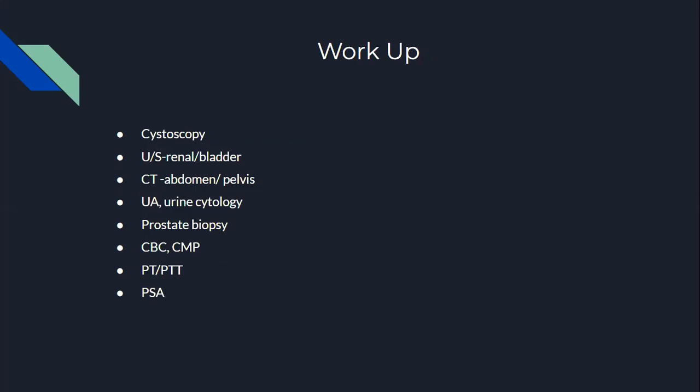For workup, depending on your differential diagnosis, here is a list: cystoscopy for possible trauma or structural issues; ultrasound of the renal system or bladder for suspected masses or stones; CT scan of the abdomen and pelvis; urine analysis and cytology for cancer cells, bacteria, and so on; prostate biopsy for prostatic cancer; CBC and CMP for anemic causes or sepsis; PT or PTT for coagulation problems or bleeding disorders; and a PSA for BPH or prostatic cancer.